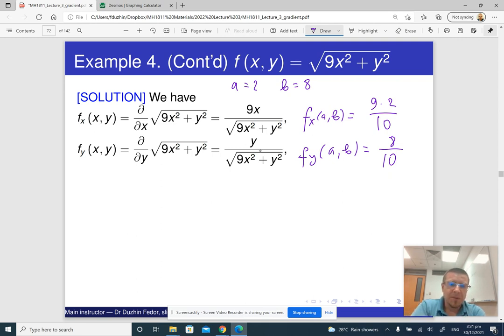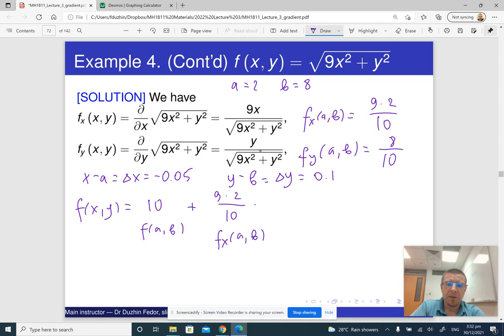Recall again that x minus a or delta x is minus 0.05 and y minus b, which is delta y, this is 0.1. So it means that f of x, y is going to be f of a, b, so this is 10, plus f_x of a, b, so this is nine times two over 10, times minus 0.05, plus eight over 10, so this is f_y of a, b, times 0.1.